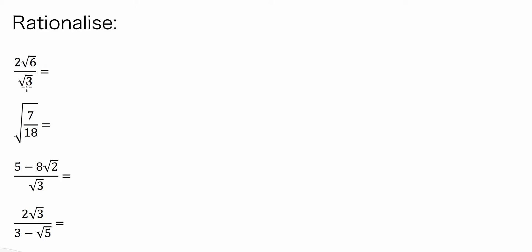So 2√6 over √3. What we're going to do to start with is we are going to multiply √6/√3 by √3 over √3. This is a very clever mathematical operation because we're essentially multiplying something by 1, but this type of 1, when we multiply it, is going to change the base to a rational number. So √3 times √3 is just 3, so we're going to end up with 3 in the base.